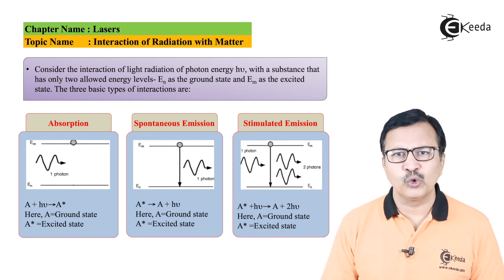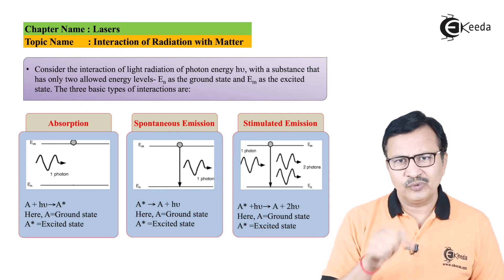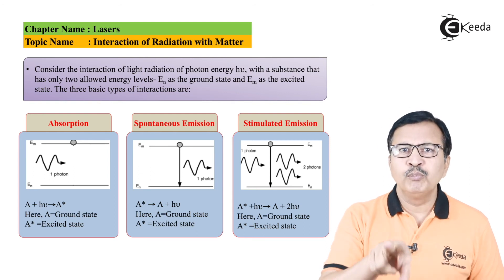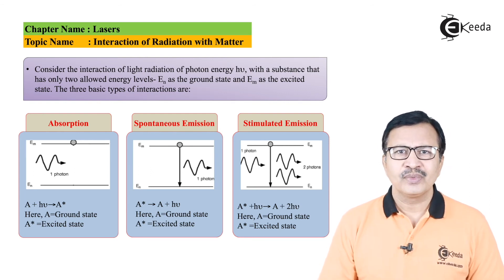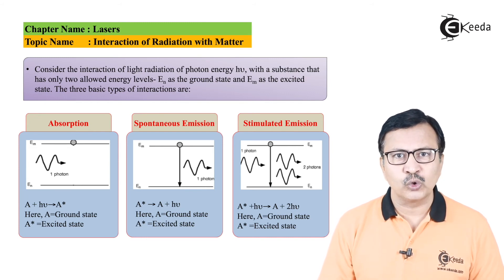This photon as well as the one with which it has been stimulated, both of them will be released. So in a single transition which has actually been stimulated by one photon, the yield will be two photons.